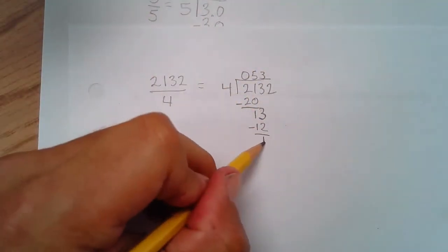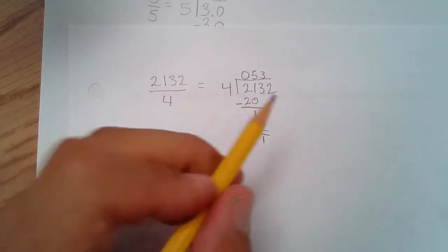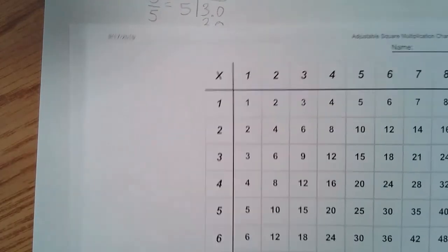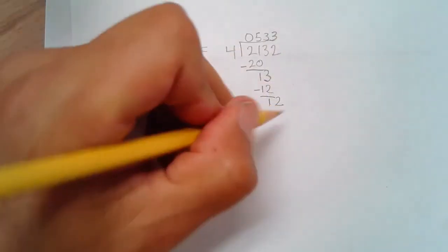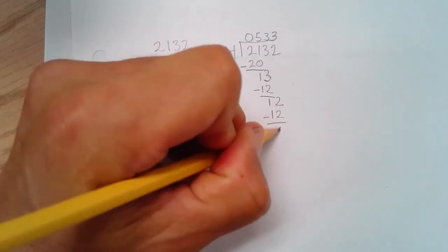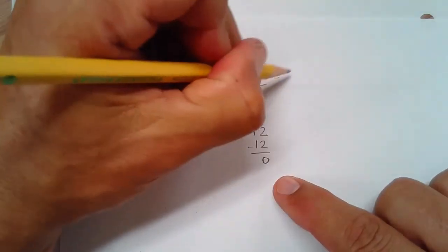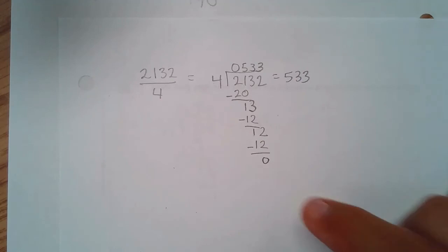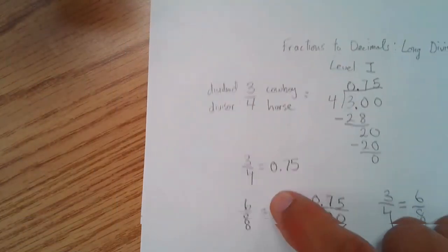Subtract — remainder one. Bring down the two. Four goes into twelve exactly three times — four times three is twelve, remainder zero. So 2132 divided by four equals exactly 533. And that's what you need to know about long division and turning fractions into decimals.